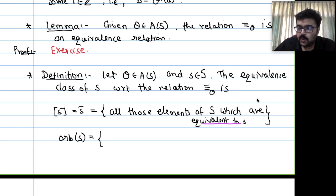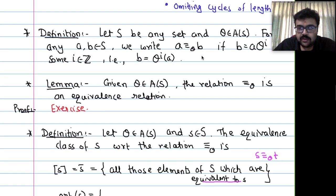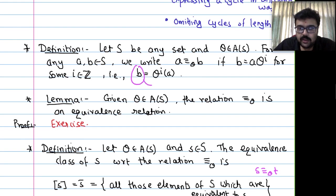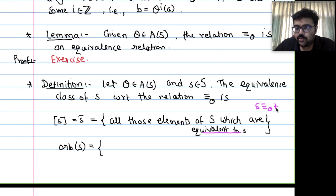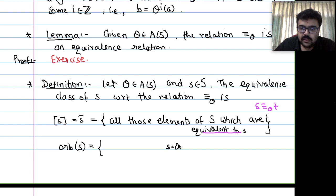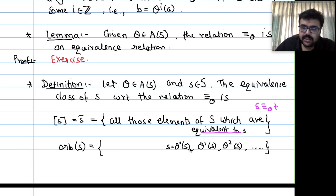The orbit of s consists of all elements T such that T = theta^i(s) for some integer i. That is, it is the set {s, theta(s), theta^2(s), ..., theta^{-1}(s), theta^{-2}(s), ...}. In Herstein's notation this is written as {s, s·theta, s·theta^2, ..., s·theta^{-1}, ...}. This is called the orbit of s under theta.